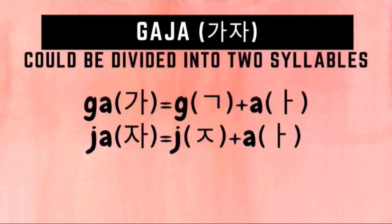How do we write kacha in Hangul? This is composed of two syllables. For the first syllable 'ga', we need to draw first a gya character followed by an a character. And for the second syllable 'ga', we need to draw a gya character followed by an a character.